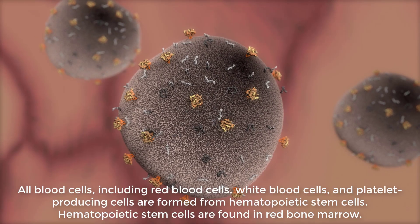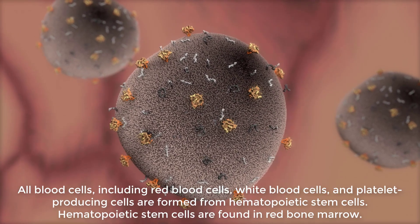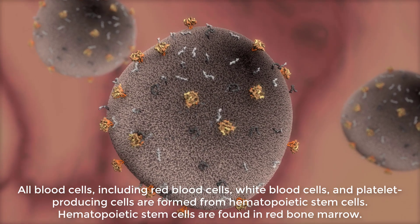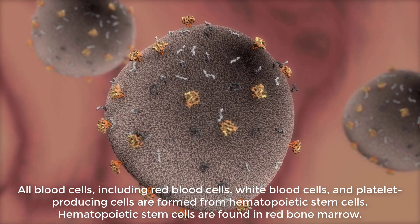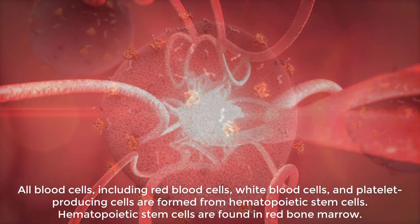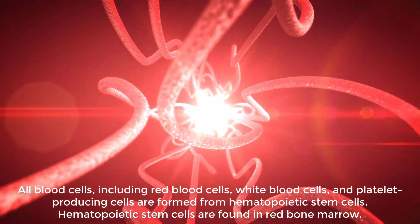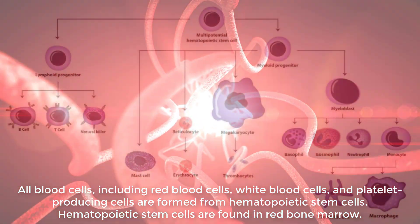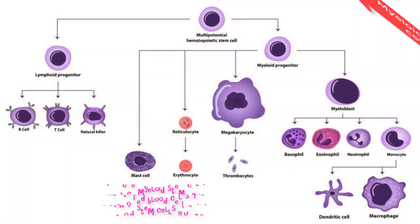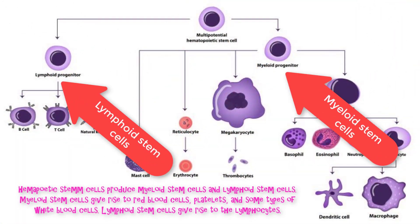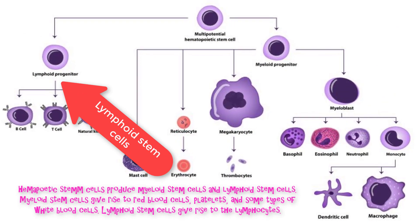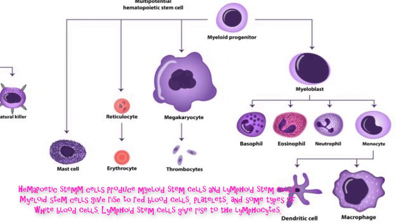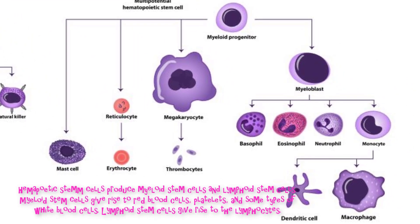All blood cells — including red blood cells, white blood cells, and platelet-producing cells — are formed from hematopoietic stem cells. Hematopoietic stem cells are found in the red bone marrow within our bones. They produce myeloid stem cells and lymphoid stem cells. Myeloid stem cells give rise to red blood cells, platelets, and some types of white blood cells.